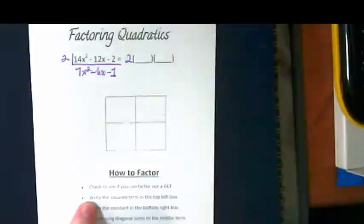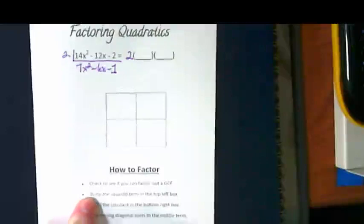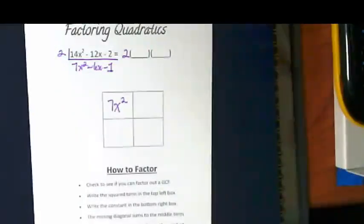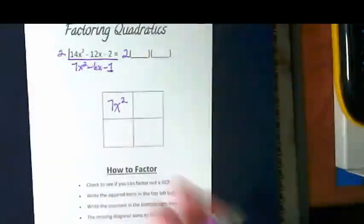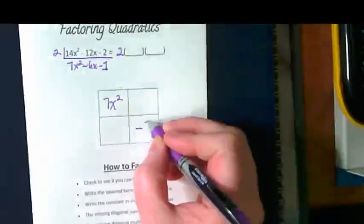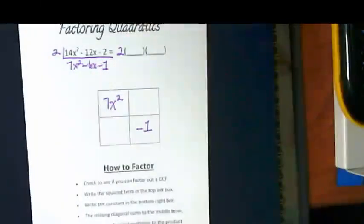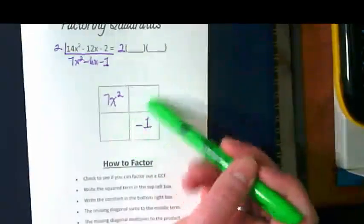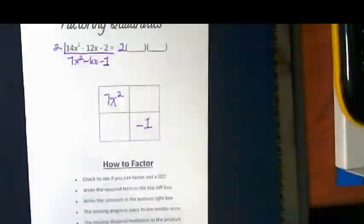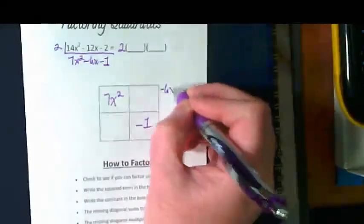The next step is to write the squared term in the top left box. The third bullet, write the constant in the bottom right box. We've been multiplying with these boxes for a while. What's going to show up here? The like terms that are going to end up equaling this negative 6x, right? So that's what we have to think about. What's going to end up here is going to equal negative 6x.